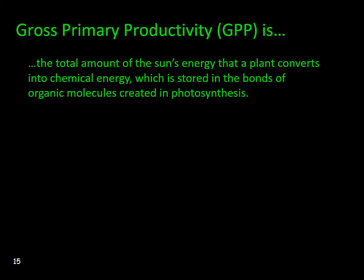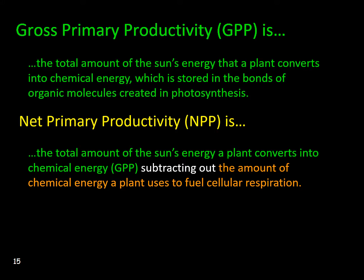Productivity comes in two forms. The first is gross primary productivity, or GPP, which is the total amount of the sun's energy that a plant converts into chemical energy, stored in the bonds of the organic molecules created in photosynthesis. The second is net primary productivity, or NPP — the total amount of the sun's energy a plant converts into chemical energy (GPP), minus the amount of chemical energy a plant uses to fuel cellular respiration.